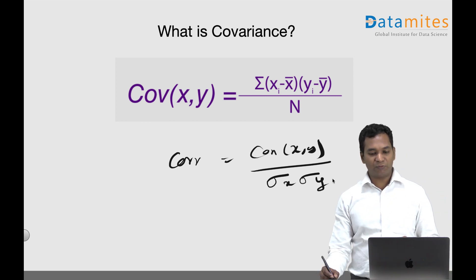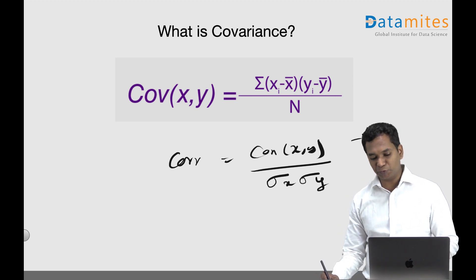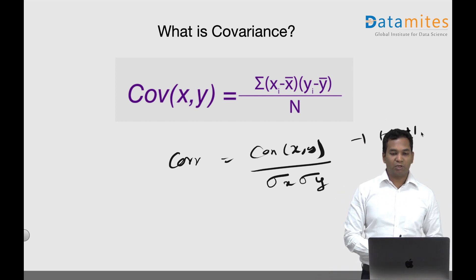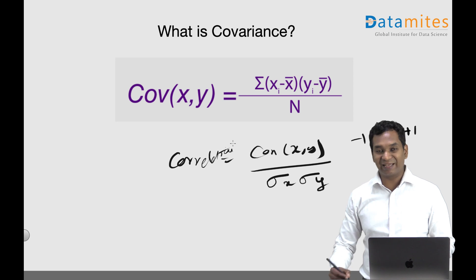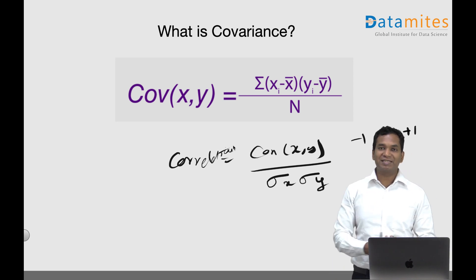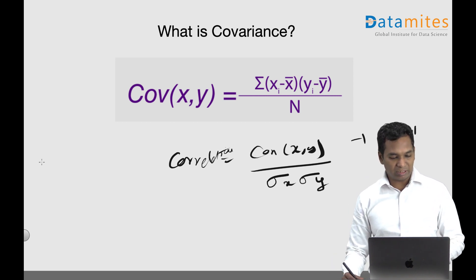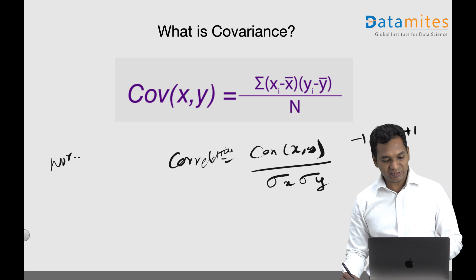This gives a normalized value between minus one to plus one. That's the relation between covariance and correlation. There's a lot of confusion - they are the same, just that covariance is a raw form of correlation and correlation is normalized. So normalized covariance is nothing but correlation.